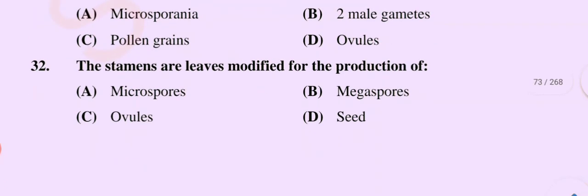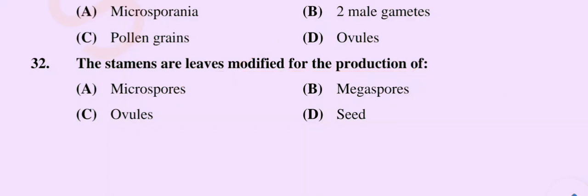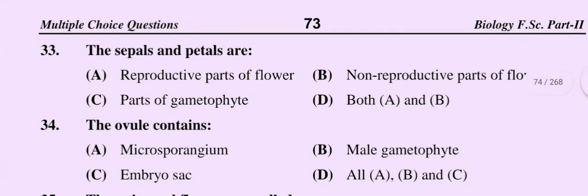Question number 32: The statement 'leaves — the stamens are leaves modified for the production of' — option A microspores, option B megaspores, option C ovules, option D seed. The correct option is option A: microspores.